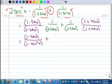And then this other term is going to be 1 plus sine x all over the same denominator, 1 minus sine squared x. Now I've got a common denominator so I can add them together.